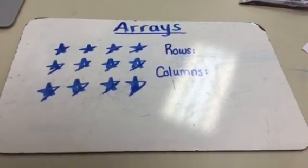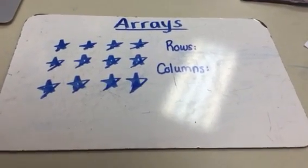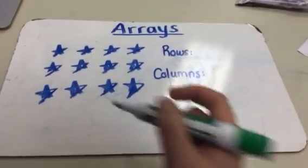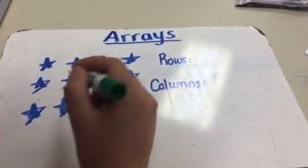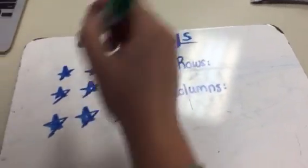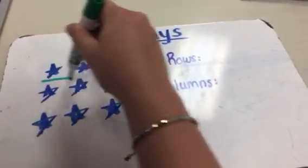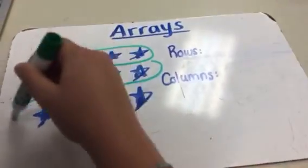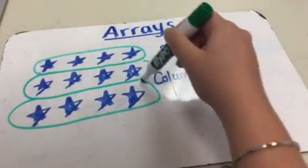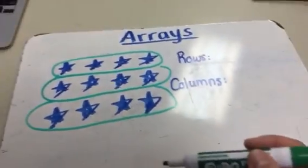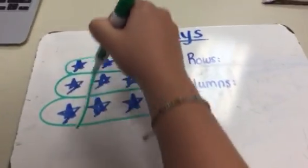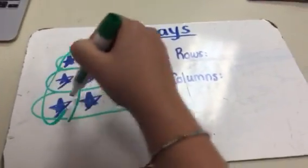Remember, a row goes horizontal — so these are your rows. And columns go vertically up and down — so these are your columns.